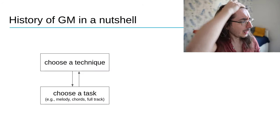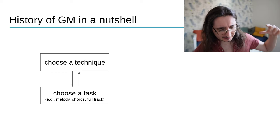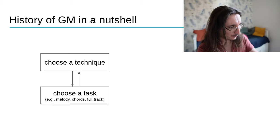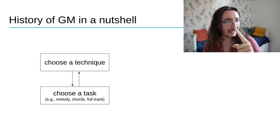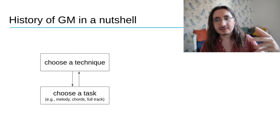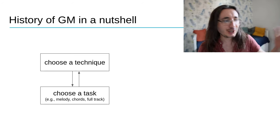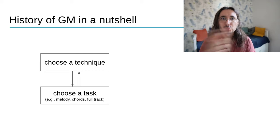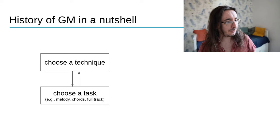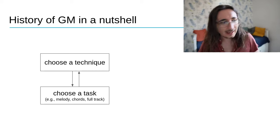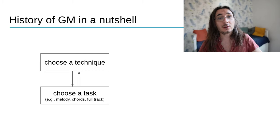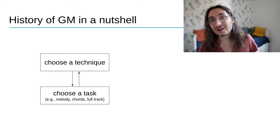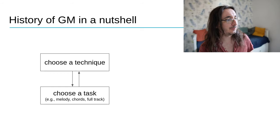The whole history of generative music can be summarized in this simple diagram: you choose a technique and then pick a task — like generating melody, chord progressions, or improvisation in a jazz style. But you can also reverse that approach where you choose a task and then find a technique for that particular task. That's what happened all the time across the history of generative music.